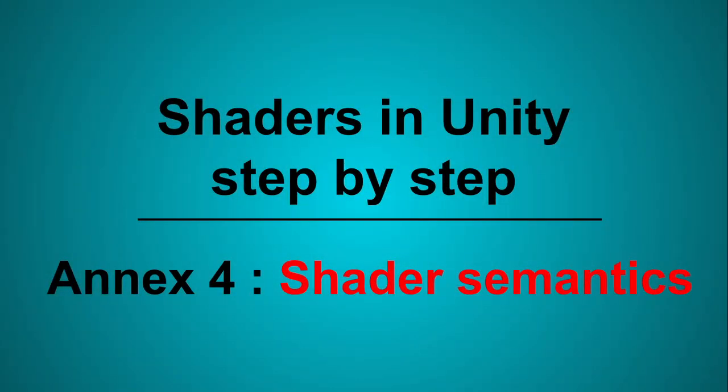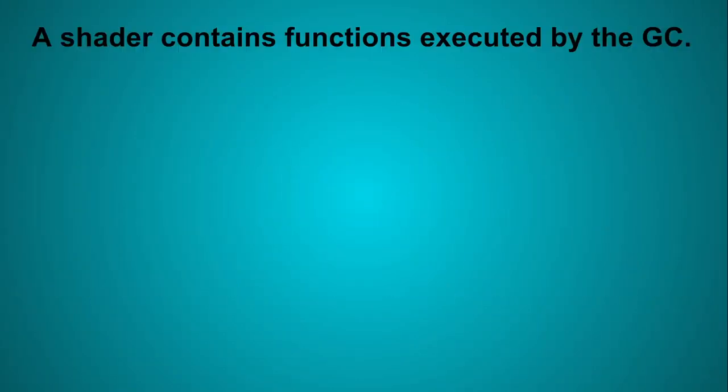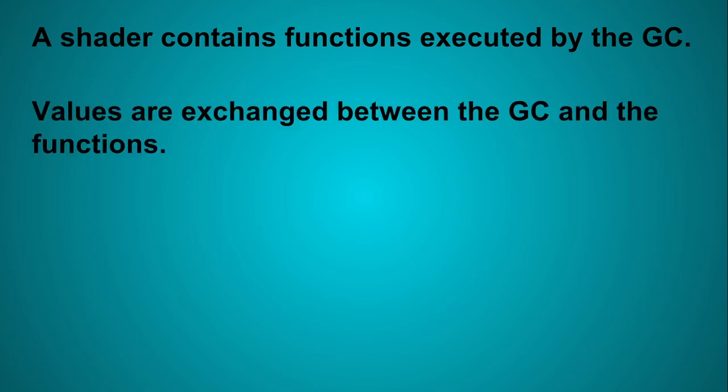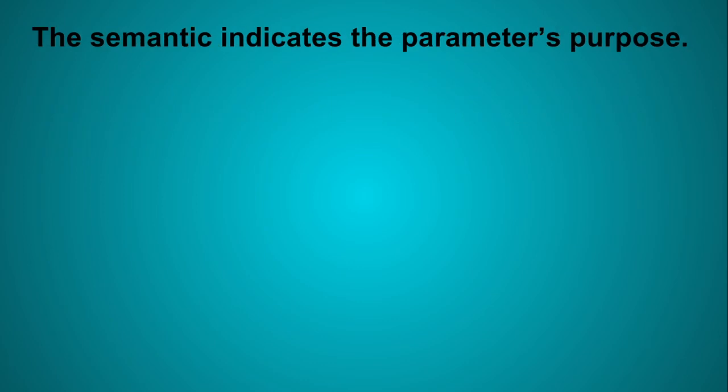Annex 4: Shader Semantics. When we write a shader, we actually write functions that will be executed on a graphic card. That implies that we need to retrieve values from the graphic card and give it back other values. Each parameter used as an input or output in our shader function must have a keyword called semantic in order to indicate the purpose of this variable. This information is used by the graphic card.